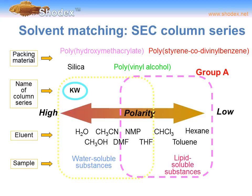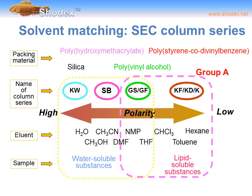For water-soluble samples, we can choose the KW series — our silica-based packed SEC column — or the SB series, our polymer-based SEC column. For lipid-soluble substances, we can choose a KF, KD, or K type column, each suited for certain solvents: the KF for THF and the KD for DMF. We also have a special GS and GF series which can be adapted for different solvents, which we will discuss later.